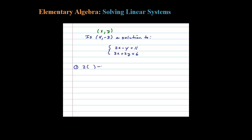So 2 times x minus y — the question is, does that equal 11 when I substitute in 4 for x and -3 for y? Let's do the math: 8, and negative negative 3 is really plus 3, so 8 plus 3 does equal 11. When I substitute in, the first equation works.